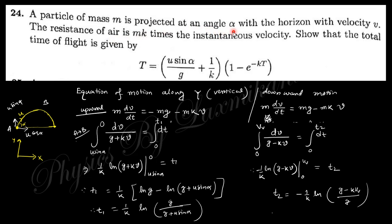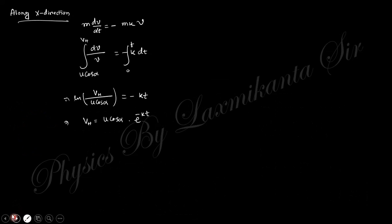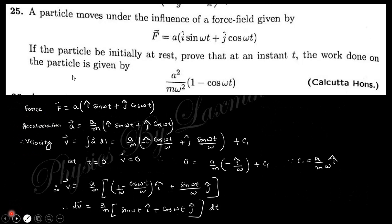Next question: a particle of mass m is projected at angle alpha with the horizontal with velocity v. The air resistance is mk times the instantaneous velocity. Find the total time of flight. I have not solved this problem at this moment — if anyone can do it, please comment. Otherwise I will provide a link in the description box.